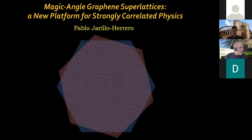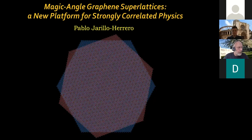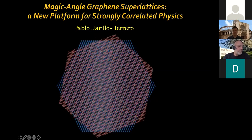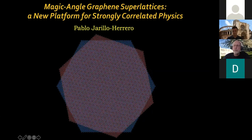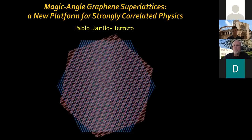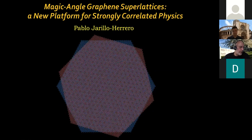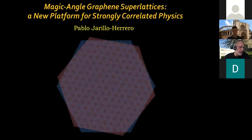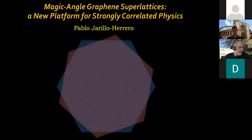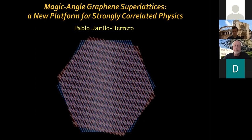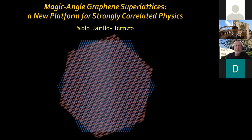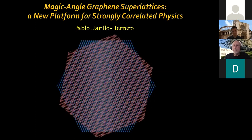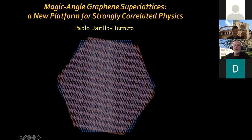This afternoon's speaker is Pablo Herrero. He's a native of Spain, did his first degree at the University of Valencia before taking a master's degree at UC San Diego. He then came back to Europe to do his PhD with Leo Kovenhofen on carbon nanotubes, followed by two further postdocs — one at Delft and one at Columbia — before becoming assistant professor at MIT in 2008, where he has been ever since, now as a full professor. He is one of the inventors, together with Ellen MacDonald, of twisted physics, and that's what we are going to learn about today.